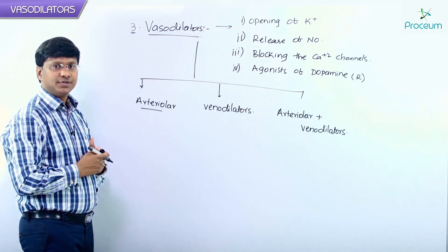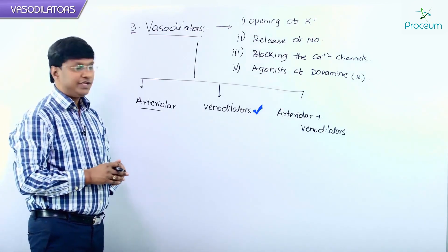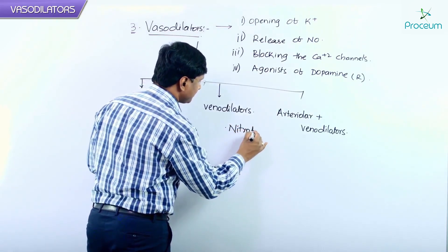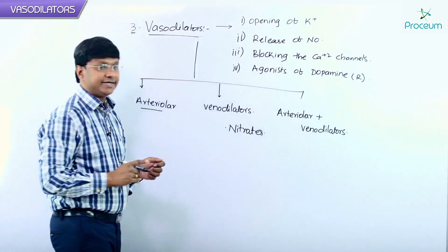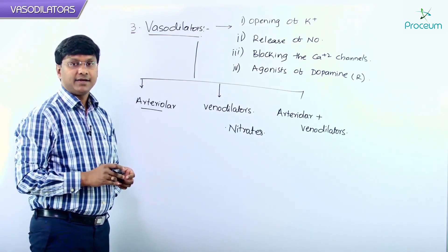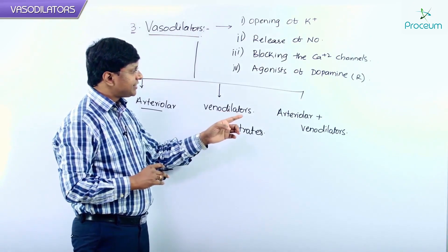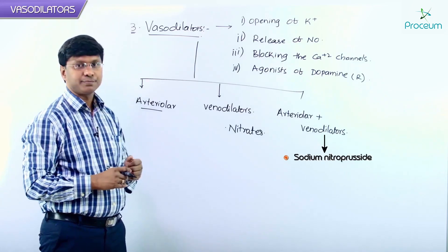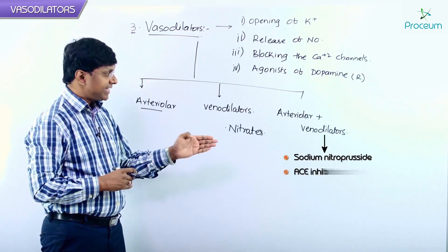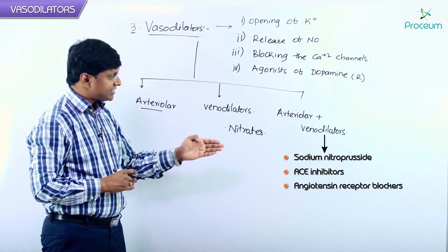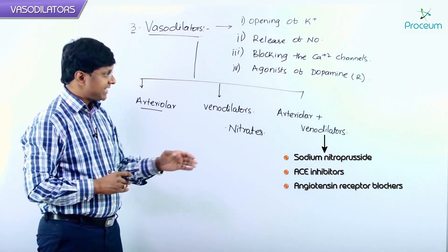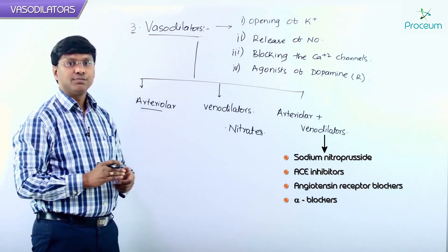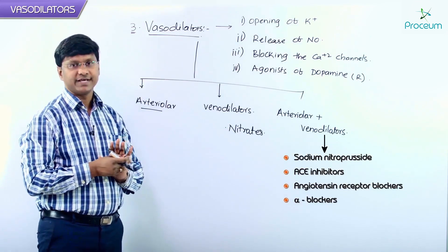Venodilators are mainly nitrates. There is also a group of drugs that cause both arteriolar and venodilation — they include sodium nitroprusside, ACE inhibitors, angiotensin receptor blockers, and alpha blockers. These drugs cause both arteriolar and venodilation.